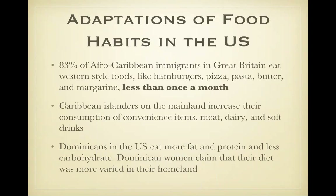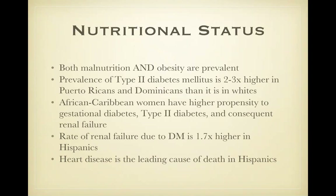Adaptations of food habits in the U.S. Many eat western-style foods less than once a month. Caribbean islanders on the mainland increase their consumption of convenience items. Rice still remains a staple and a main energy source for all levels of acculturated peoples. Nutritional status: Puerto Ricans, Cubans, and Haitians associate well-being with being a little bit larger, and they actually give a name to this — they call it Gordita.